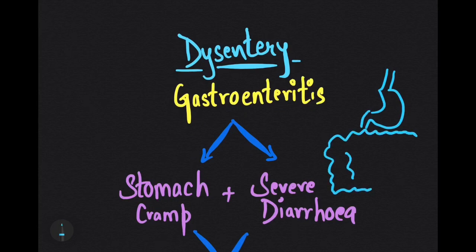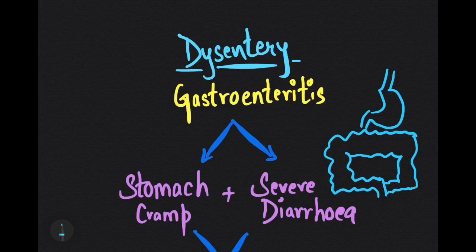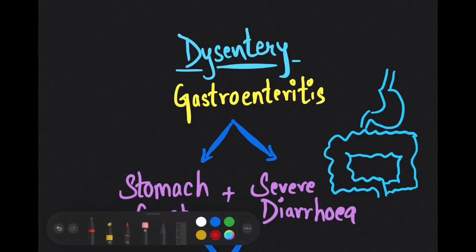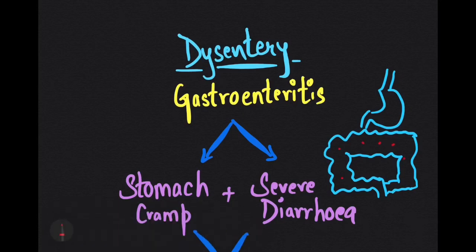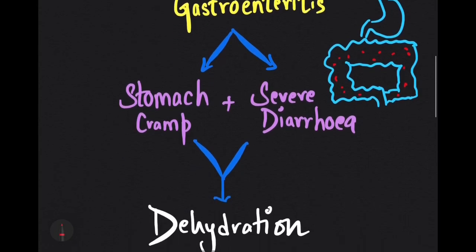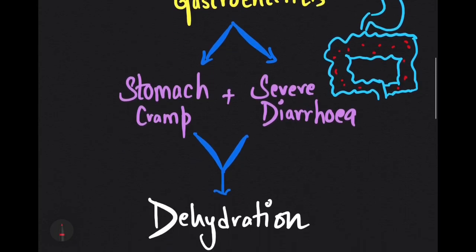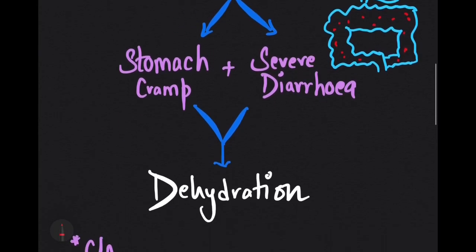Diarrhea has no other significant symptoms, but in the case of dysentery, it is an intestinal inflammation — gastroenteritis — primarily of the colon, with stomach cramps and severe diarrhea along with blood and mucus present in the stool, which leads to the complication of dehydration.